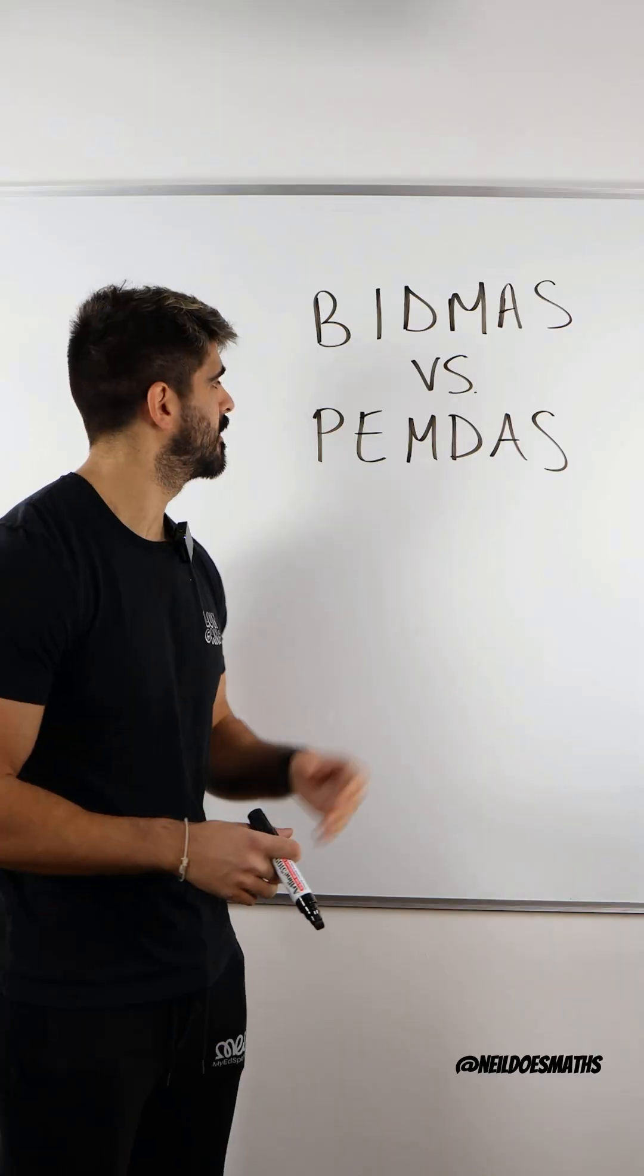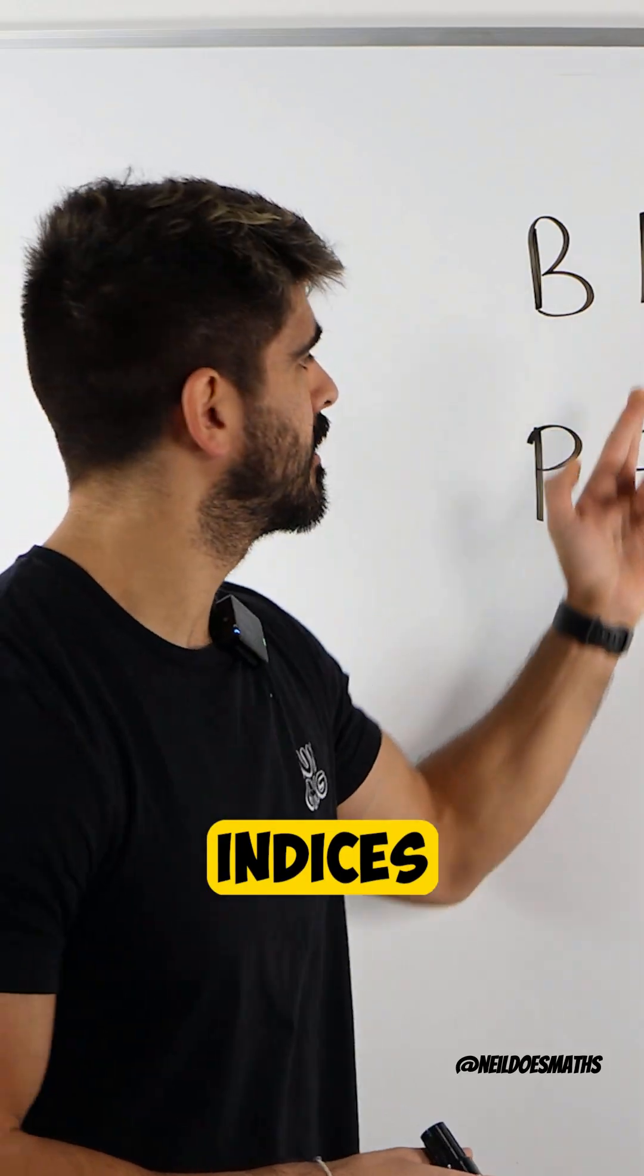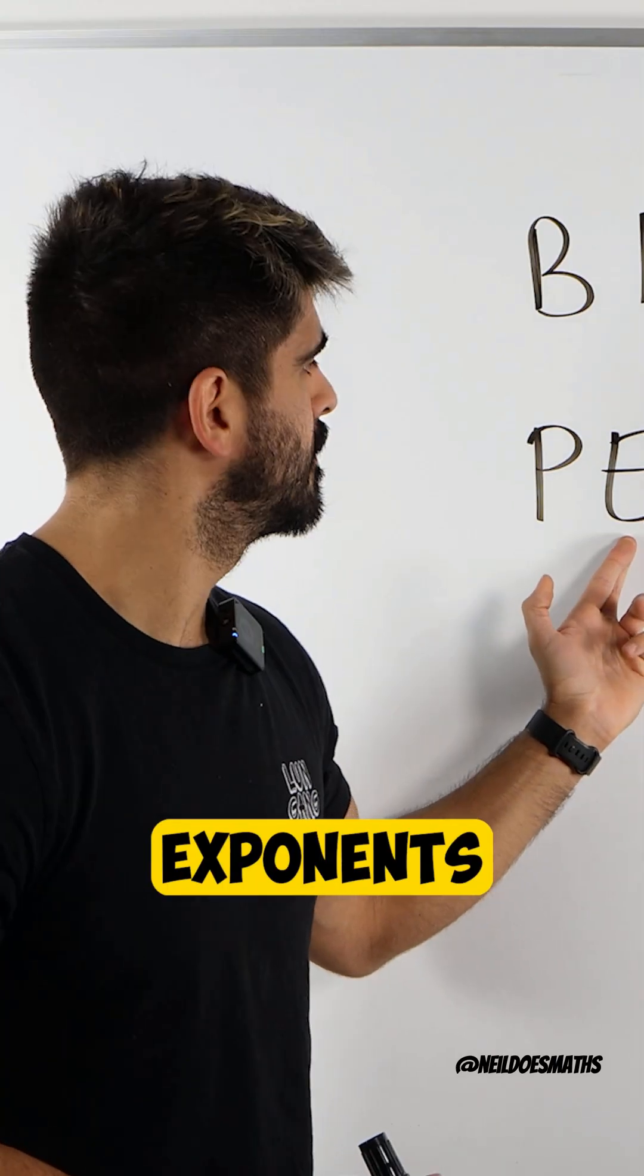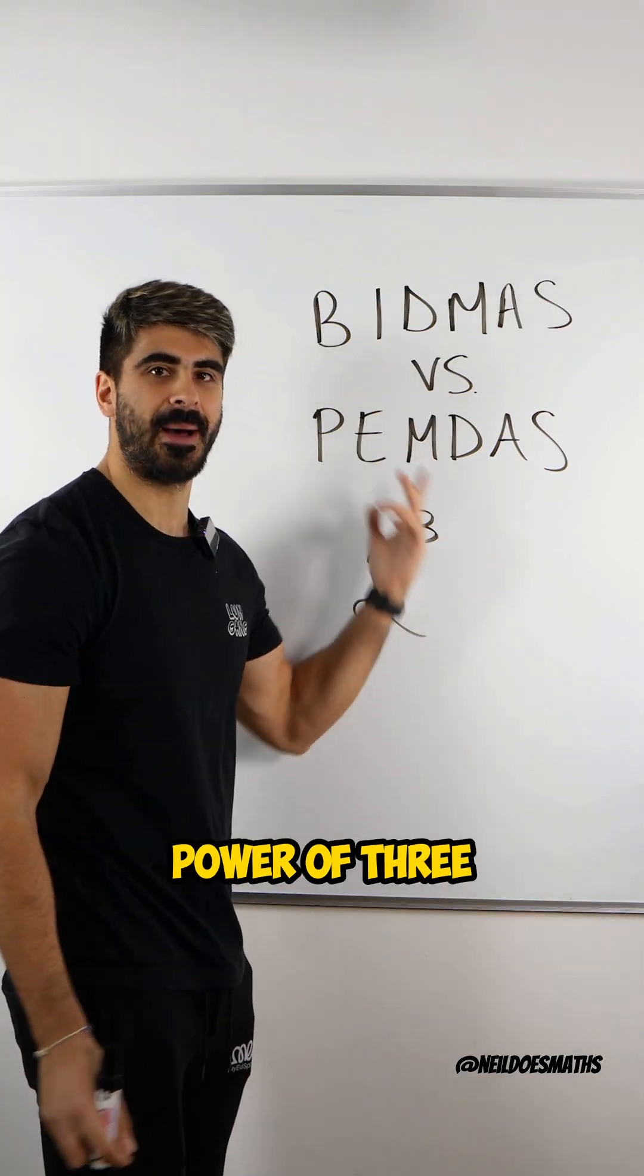B stands for brackets. P parentheses. I indices. E exponents. These are obvious. I and E just look like stuff like this: two to the power of three.